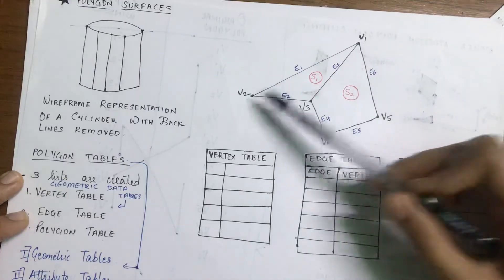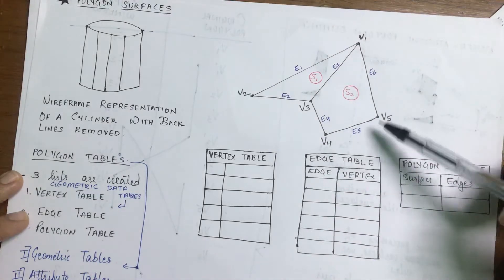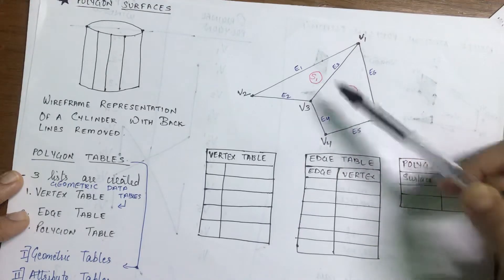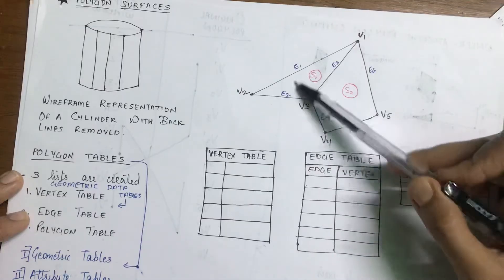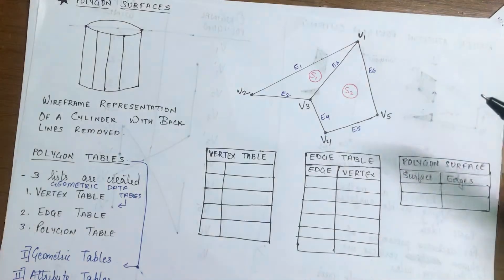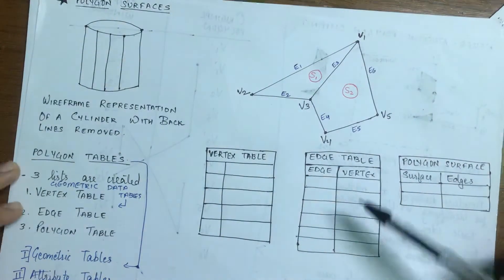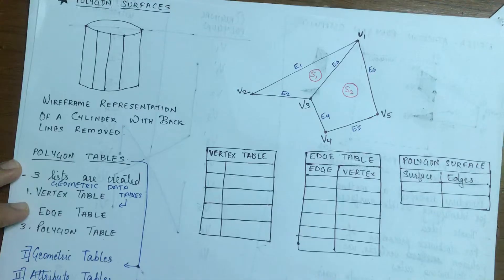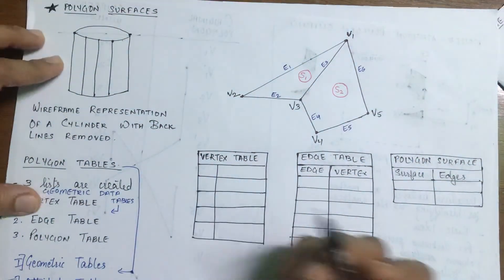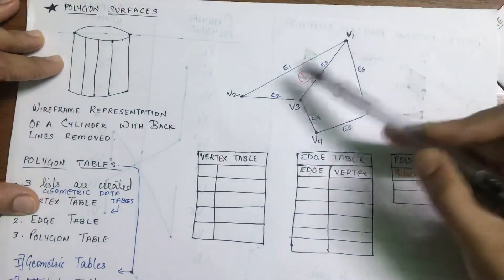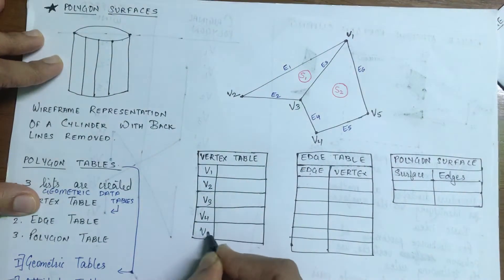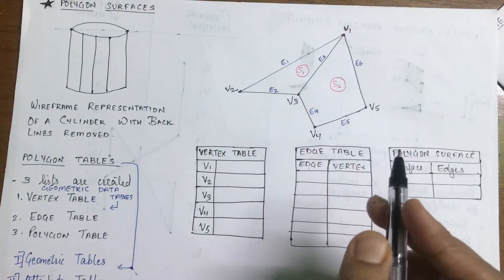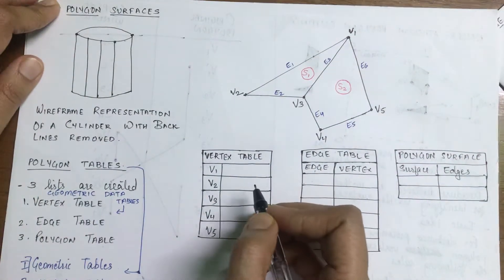I have numbered them V1, V2, V3, V4, V5. This object has two surfaces: this triangle is my first surface and this polygon is my second surface. The vertex table will have the vertex information. Since we are doing 3D representations, every vertex will have three coordinates associated with it: V1 has (X1, Y1, Z1), V2 has (X2, Y2, Z2), V3 has (X3, Y3, Z3), V4 has (X4, Y4, Z4), and V5 has (X5, Y5, Z5).